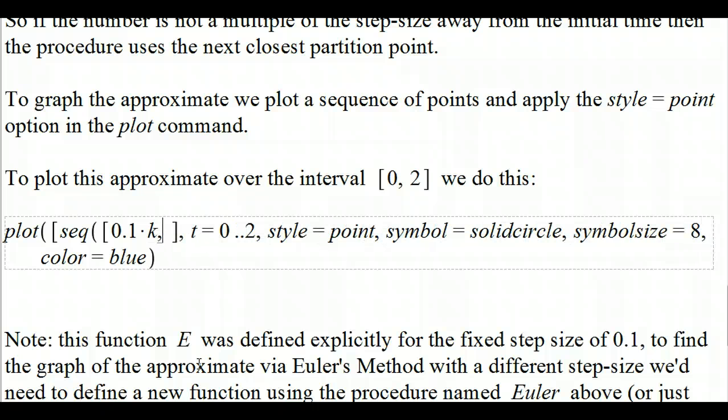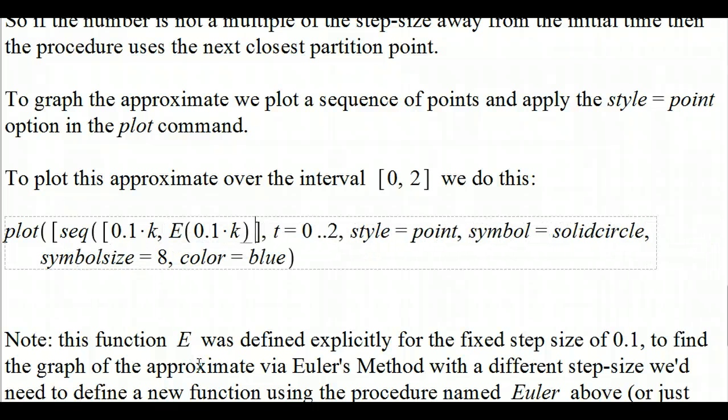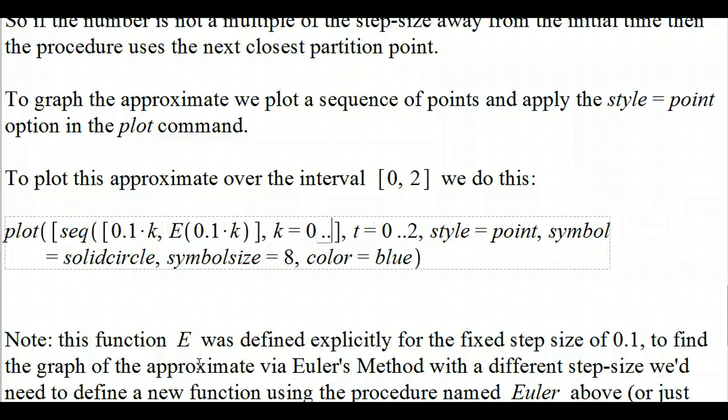Then we're going to put that t value, 0.1 times k, into the other procedure. We're going to close that list, and we're going to say we're going to let k run from 0 up to, in this case, we're trying to approximate over the interval from 0 to 2. To go from 0 to 2 in steps of size 0.1, we're going to have to use 20 steps, so we need to go up to 20. This is something you're going to have to change on a case-by-case basis if you're using this procedure.